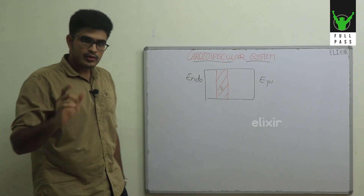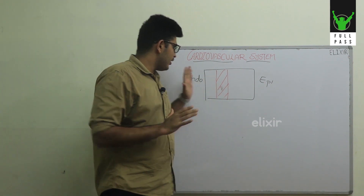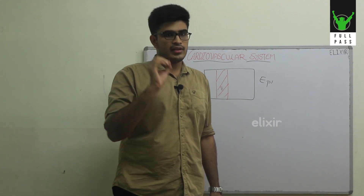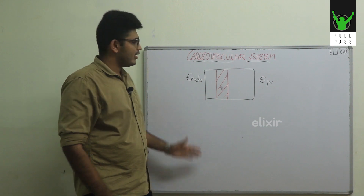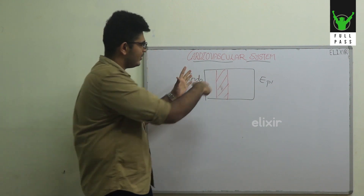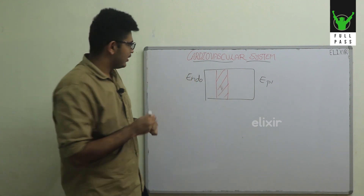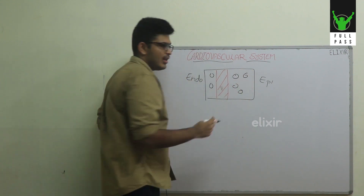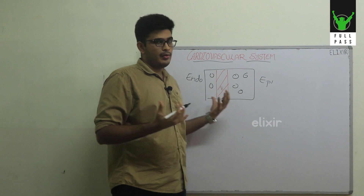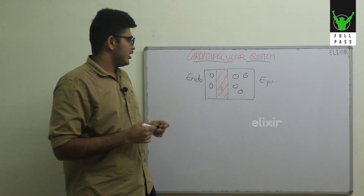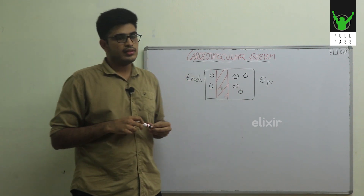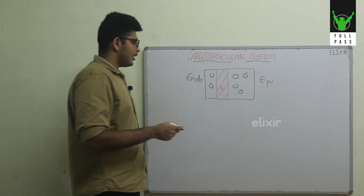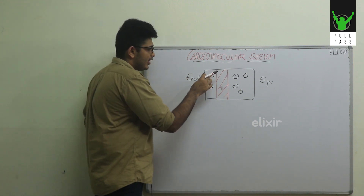The first factor to remember is that the ventricular musculature is only perfused during diastole. This is because when the muscles contract, the vessels within the musculature are compressed and blood doesn't enter into these vessels, so perfusion is decreased during systole and perfusion happens only during diastole.